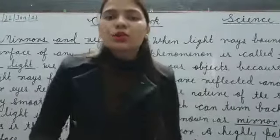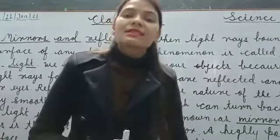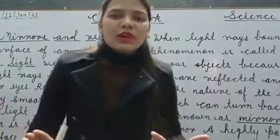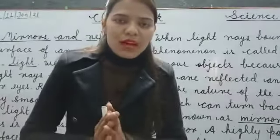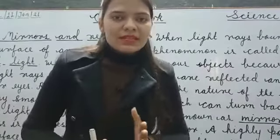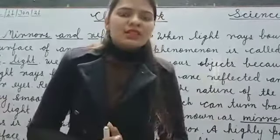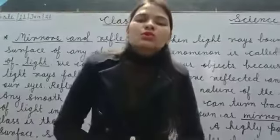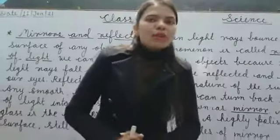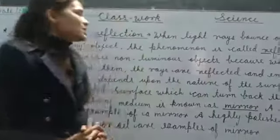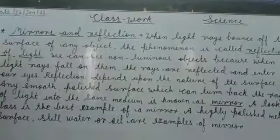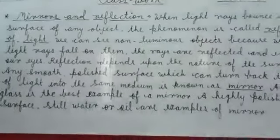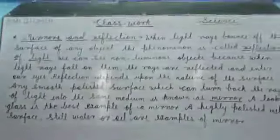Highly polished metal surfaces, still water, and oil are also examples of mirrors. Polished water bhi aapka mirror ka example hai, because we see our reflection in that. So students, this is all about reflection and mirror — note down this class work in very neat and clean handwriting. Thank you.